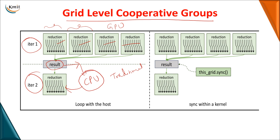In this traditional approach, four kernel launches are required, and again for intermediate results, one more function call is needed. If there are three iterations, the function must be called multiple times. To overcome that particular problem, we go for grid level cooperative groups, where the intermediate results need not be passed to the CPU. Using a single kernel function, you can perform all the operations. This is one major reason why we go for grid level cooperative groups.